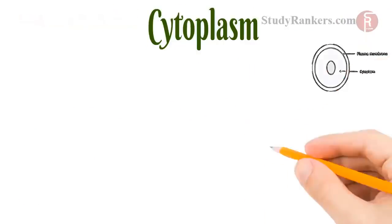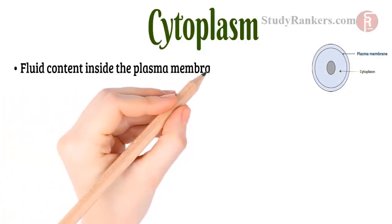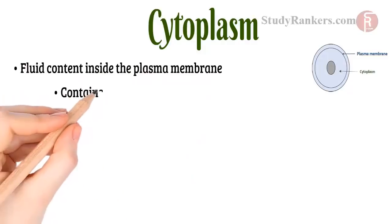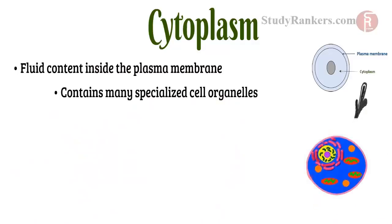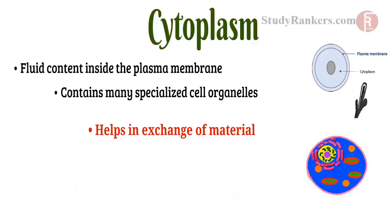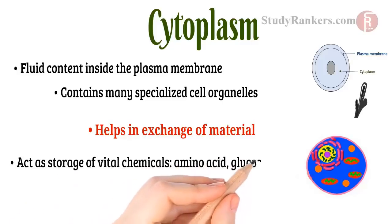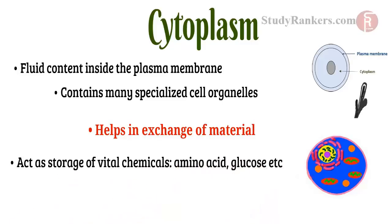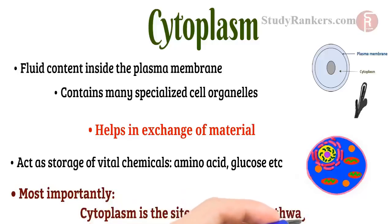Lastly, we will talk about cytoplasm. The cytoplasm is the fluid contained inside the plasma membrane. It also contains many specialized cell organelles. It helps in exchange of material between cell organelles, acts as a store of vital chemicals like amino acids and glucose. Most importantly, cytoplasm is the site of certain metabolic pathways.